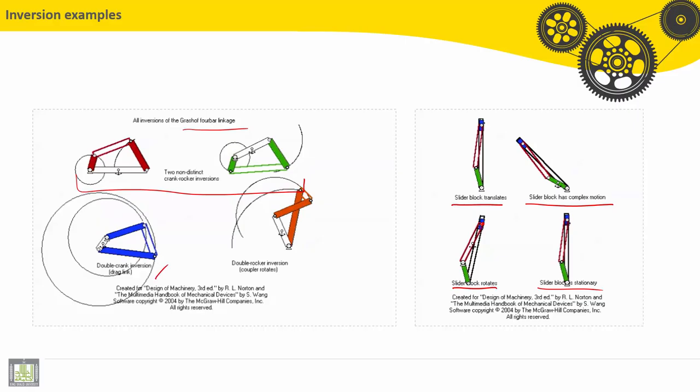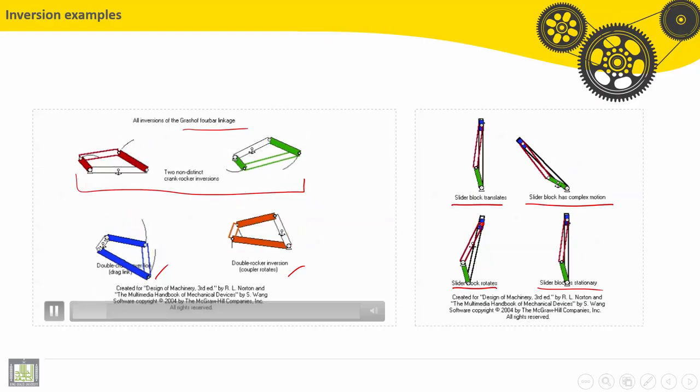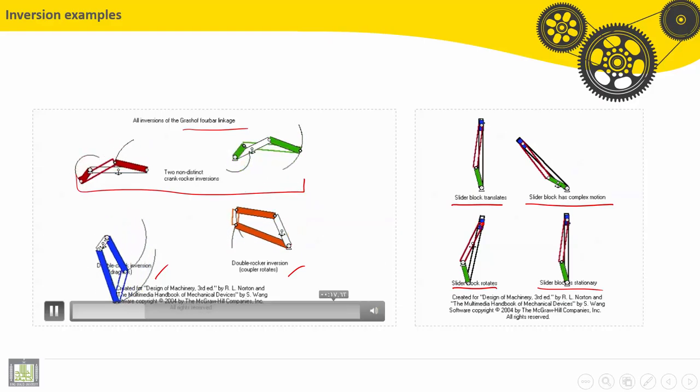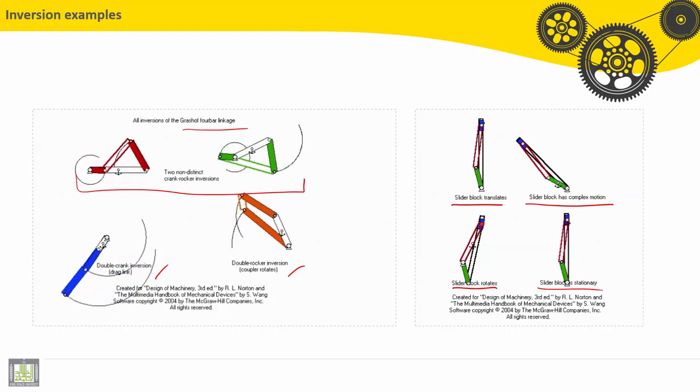This one, it is called a double crank inversion. And here, double rocker inversion. Let's see again. You can see the difference between double crank inversion and double rocker inversion.